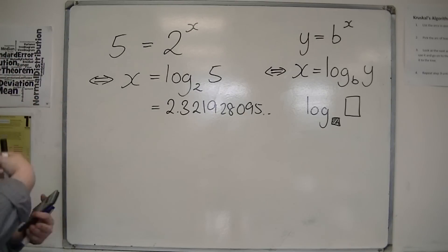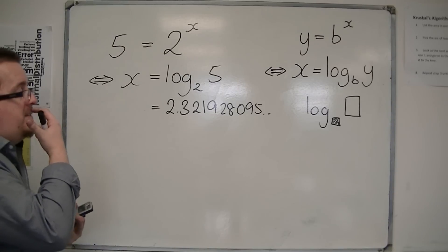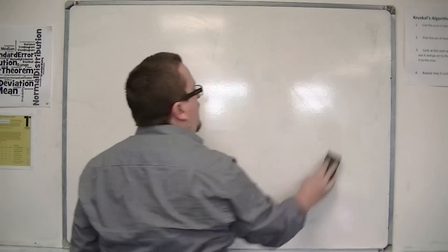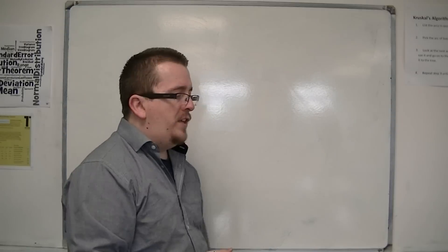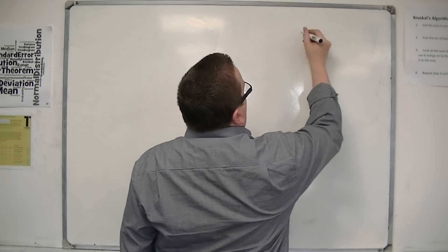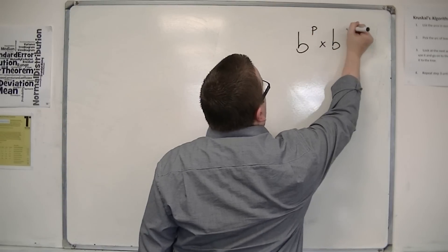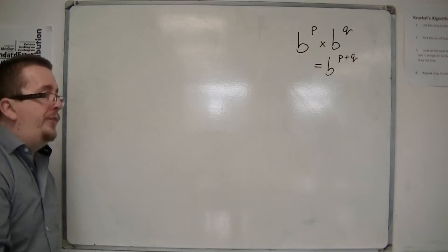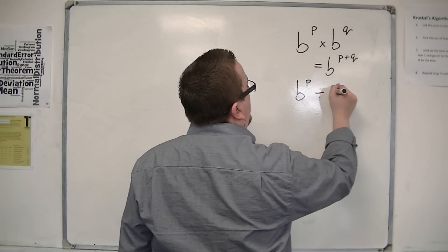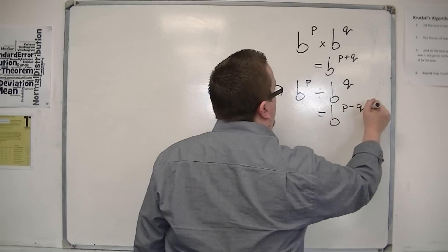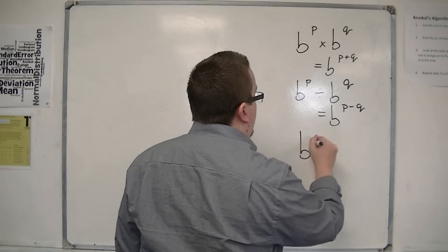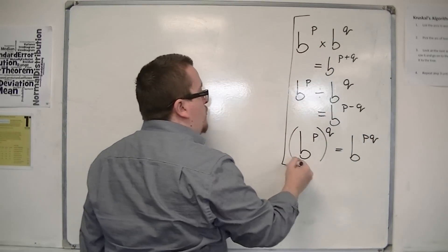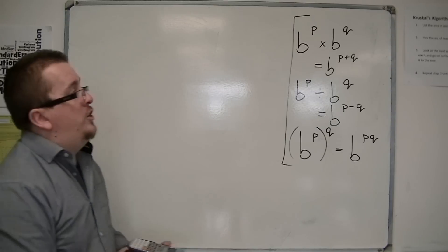What comes with logarithms is a few laws that will help solve many other problems. You should already be familiar with exponential notation index laws: b to the p times b to the q equals b to the p plus q; b to the p divided by b to the q equals b to the p minus q; and b to the p to the power of q equals b to the pq. These are the three index laws.